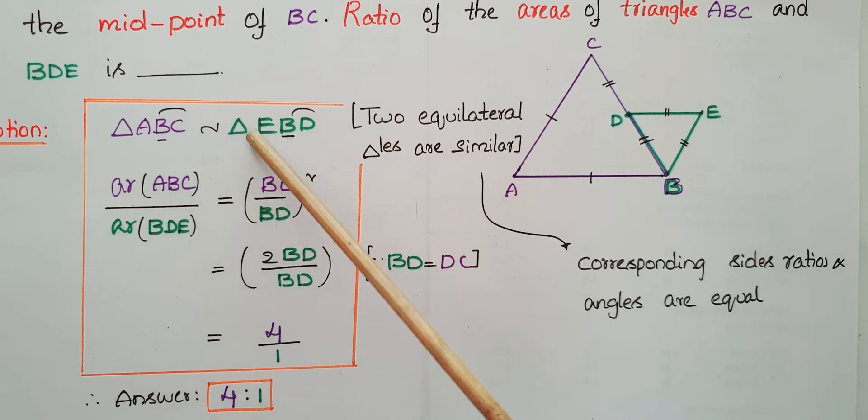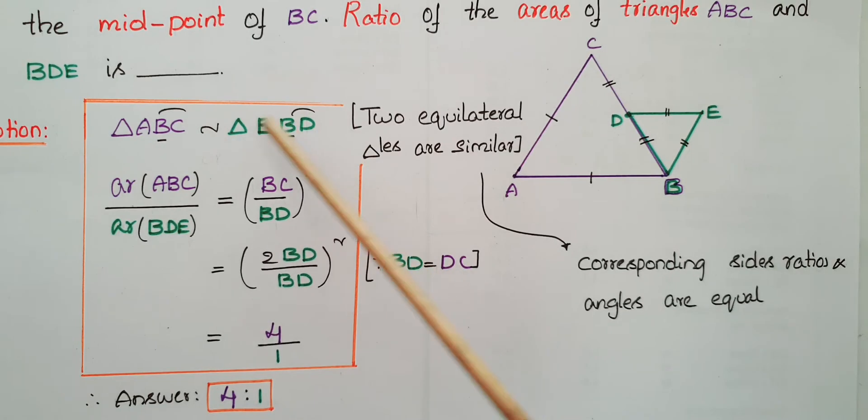Therefore triangle ABC is similar to triangle EBD. Here these two angles are equal. Corresponding angles are equal. B is at the center and this triangle name you can write in any order, but I have taken EBD in this direction because there is a relation between BC and BD. D is the midpoint. So you have to write in this order.